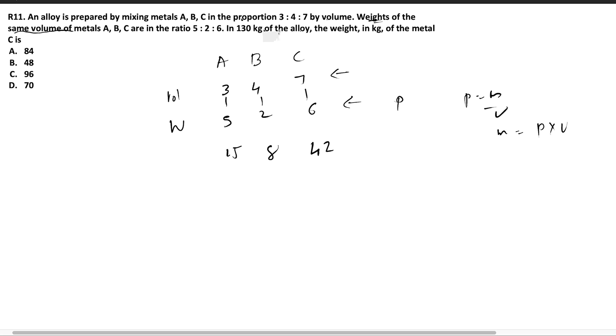And in the question, it is asked in 130 kilogram of the alloy, the weight in kilogram of the metal C is. So the total weight of alloy is 130 kilogram. And here you have the metal A, B, C in the ratio 15 is to 8 is to 42 by weight. So if you add it up, you will get it as 65. 15 plus 8, 23 plus 42 is 65. So there are a total of 65 units in this ratio. And 65 units corresponds to 130. And one unit corresponds to 130 divided by 65. The question here is to find out the weight of metal C, which is actually 42 parts. So one part is 130 by 65, 42 parts is 130 by 65 into 42. 65 into 130, you will get it as 84. So the answer is option A.